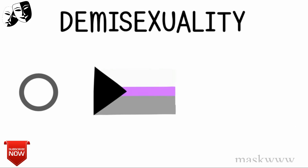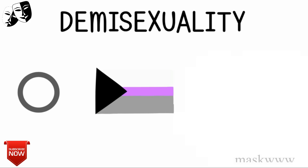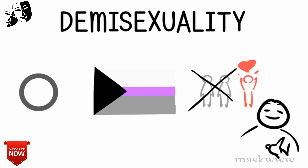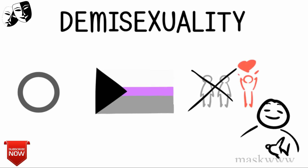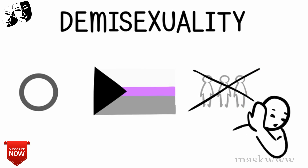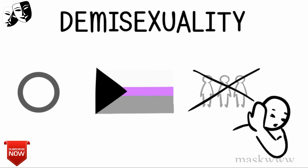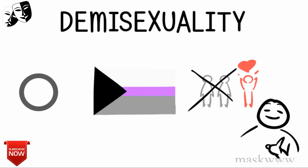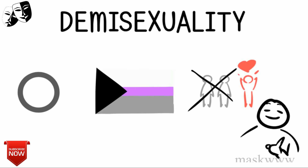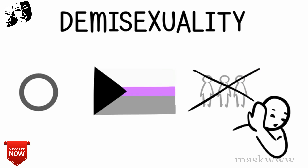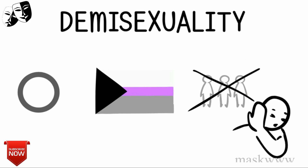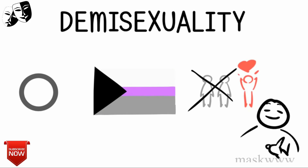8. Demisexuality. Demisexuality can technically fall under the asexual umbrella. People who are demisexual do experience sexual attraction, but only after an emotional connection is created. They wouldn't find a stranger on the street sexually appealing, but after they get to know someone well, the possibility of sexual attraction is there. Demisexuality is considered the halfway point between asexuality and allosexuality — those who experience sexual attraction.